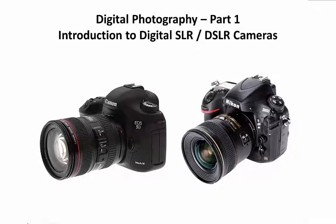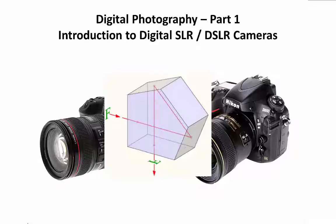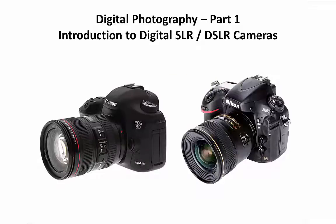Digital photography part one: introduction to digital SLR or DSLR cameras. A digital SLR is a digital camera that incorporates a single lens reflex mechanism. SLR technology gives the photographer through-the-lens viewing of the subject before the picture is taken. This is accomplished by a reflex mirror and a pentaprism — a five-sided prism that deviates light by 90 degrees, reflecting it twice inside the prism before it exits.